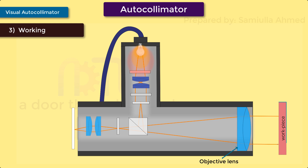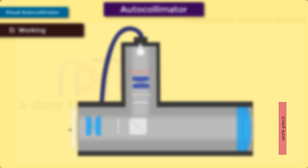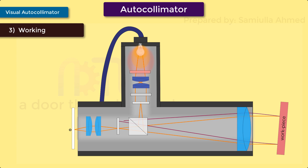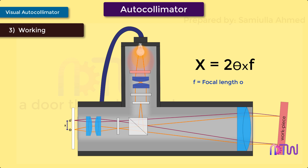If the plane reflector — which is the workpiece surface — is perpendicular to the beam of light, it will reflect the beam back in the same path, and both beams will fall at the same point O. If the workpiece surface is at angle theta, the beam of light will be reflected back at an angle 2 theta, so the reflected beam will fall at a different point O dash. By knowing the distance X between O and O dash, and the focal length of the lens, we can use the relationship X = 2θF to find the angle theta. This is the working of the autocollimator.